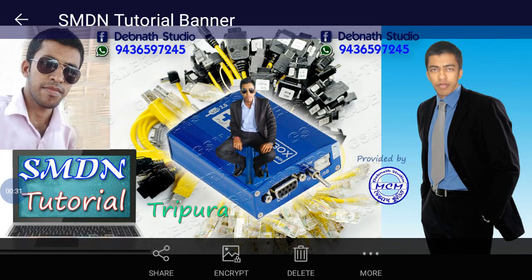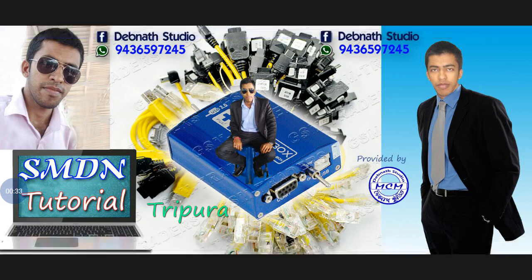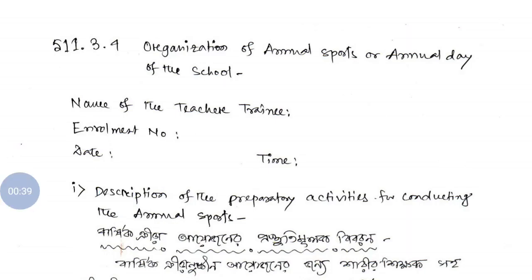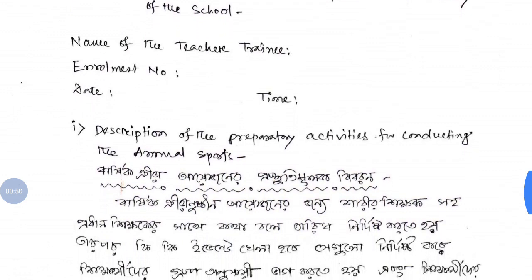Organization of the contribution of the school program — the inter-part package. Part 11.3.4 covers the organization of the annual sport or annual day of the school. We begin with the name of the teacher, training details, number, and date.